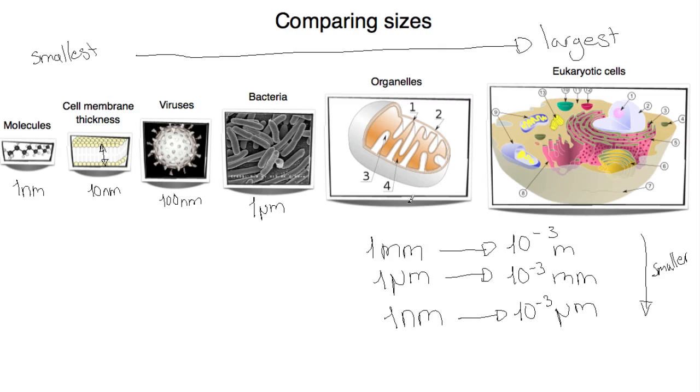Organelles. Now, we've got many types of organelles. I've taken mitochondria here, which you can see here as well in the cell, and they can be anything up to 10 micrometers.